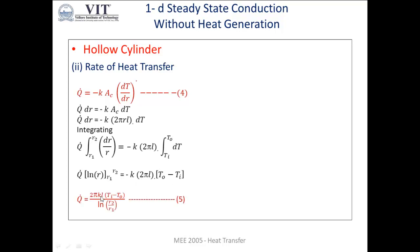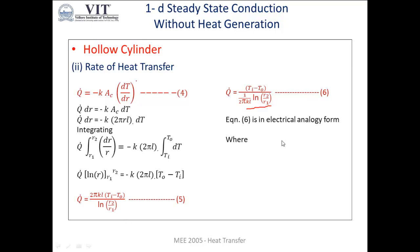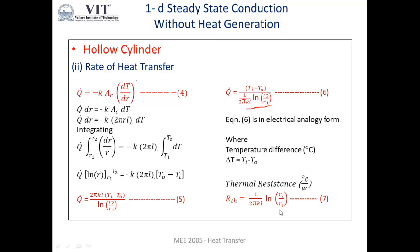Therefore, the rate of heat transfer is Q = 2πKL · (Ti − T0) / ln(R2/R1). Writing this in the form of the electrical analogy, Q = ΔT / R_thermal, where the temperature difference ΔT = Ti − T0, and the thermal resistance is R_thermal = ln(R2/R1) / (2πKL).